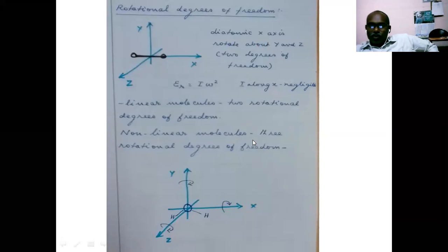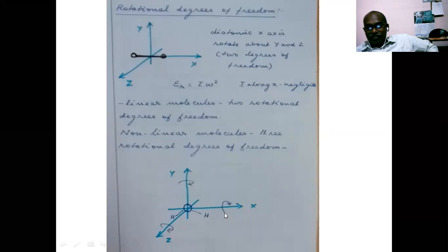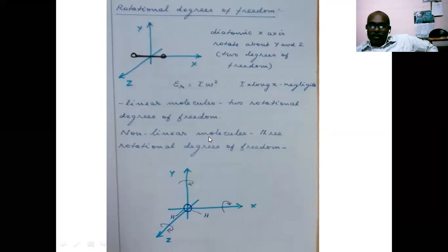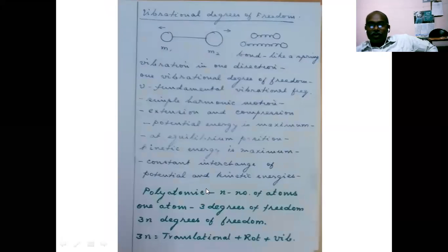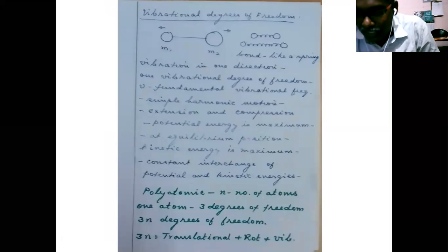There are three translational degrees of freedom. For linear molecules, there are two rotational degrees of freedom; for non-linear molecules, there are three rotational degrees of freedom. Now I want to find out the vibrational degrees of freedom. You have to understand thoroughly what vibrational degrees of freedom means.